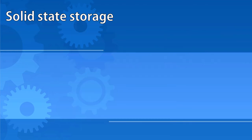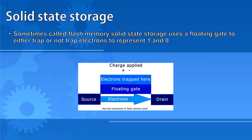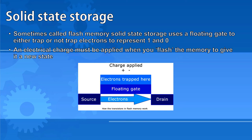Solid-state storage is often referred to as flash memory. It uses a floating gate to either trap or not trap electrons to represent ones and zeros. An electrical charge must be applied when you flash the memory, which is the name given to giving it a new state.